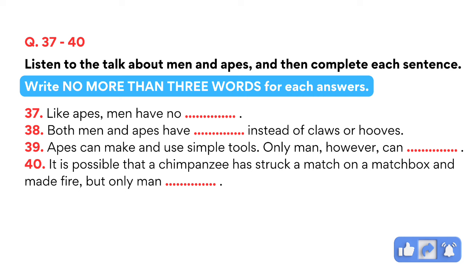All human beings everywhere have a language, and there are thousands of different languages in the world. All these languages are equally complex, and they are very different from the cries of apes and other animals. Finally, we can use fire-making to differentiate men from apes. Man has possessed the secret of making fire for thousands of years. In contrast, neither apes nor any other animals possess this secret.